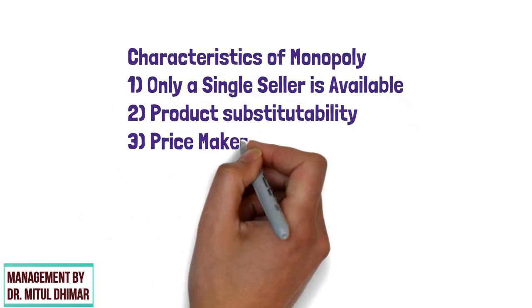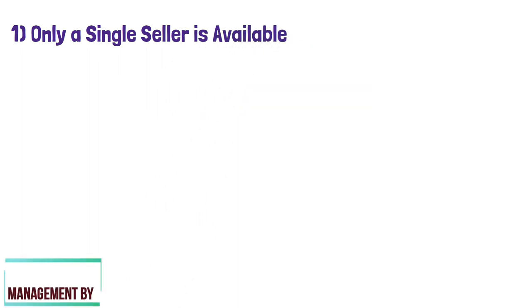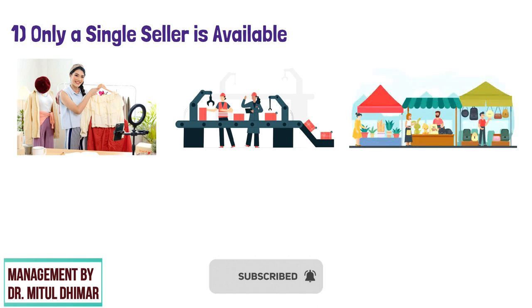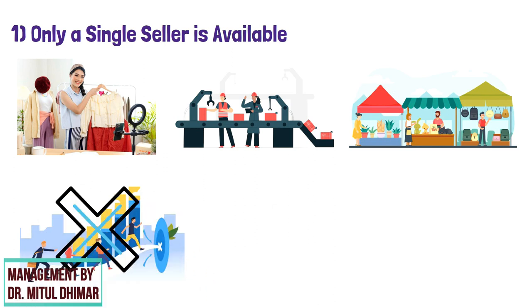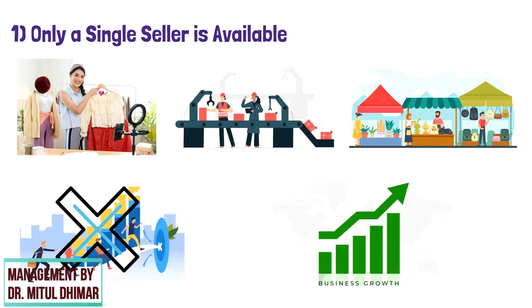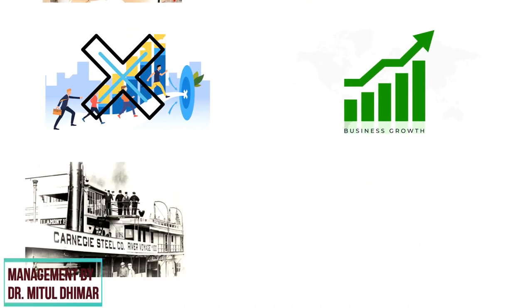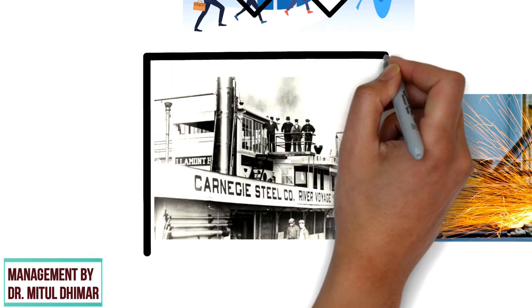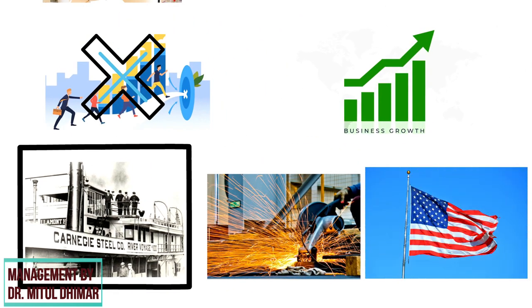The following characteristics are covered in this video. Only a single seller is available. In a monopoly, one seller produces all of the output for a good or service. The entire market depends on a single seller, which also means that the seller has no competition and holds the entire market share of the offering it deals in. Carnegie Steel Company obtained control over every level involved in steel production and was the sole seller of steel, holding almost the entire steel industry in the United States.